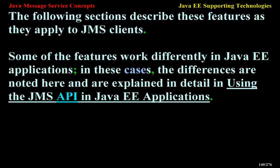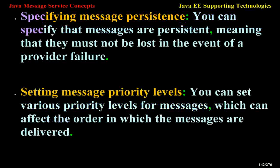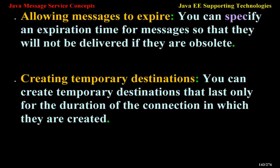Using Basic Reliability Mechanisms. The basic mechanisms for achieving reliable message delivery are: Controlling Message Acknowledgement — you can specify various levels of control over message acknowledgement; Specifying Message Persistence — you can specify that messages are persistent, meaning they must not be lost in the event of a provider failure; Setting Message Priority Levels — you can set various priority levels for messages, which can affect the order in which messages are delivered; Allowing Messages to Expire — you can specify an expiration time for messages; and Creating Temporary Destinations — you can create temporary destinations that last only for the duration of the connection.